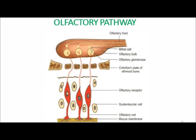Different groups of these synapses — between the dendrites of the mitral cells and the axons of the receptor cells — form globular structures called olfactory glomeruli, visible as round yellow structures in the olfactory bulb. The axons of the mitral cells leave the olfactory bulb, form the olfactory tract, which runs backwards and ends in the olfactory cortex.